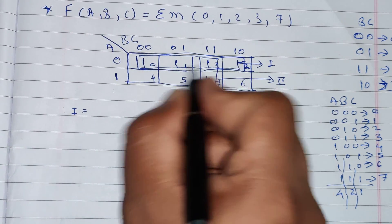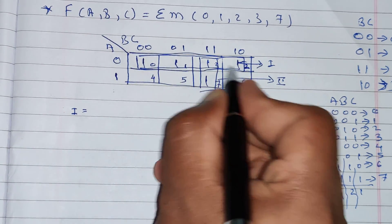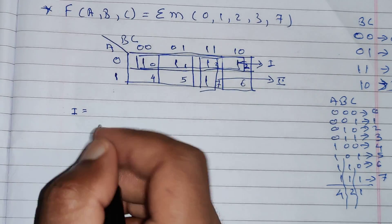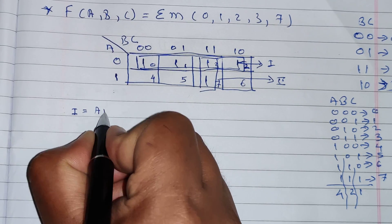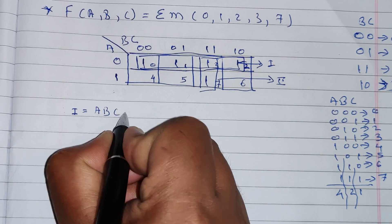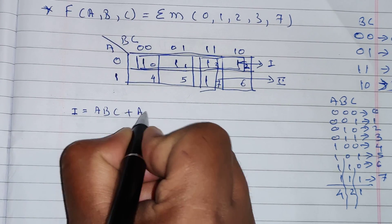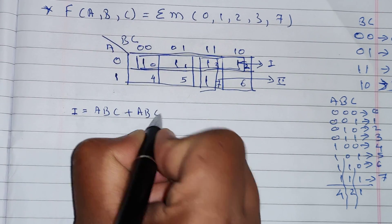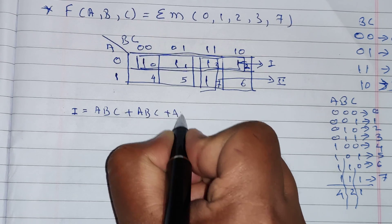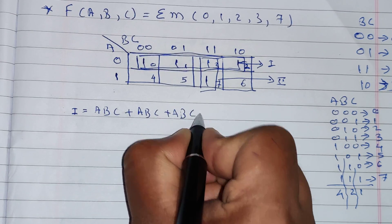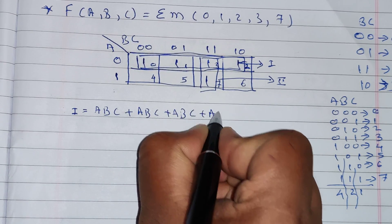For Group 1, there are four 1s, so we write four terms: ABC + ABC + ABC + ABC (using complemented or uncomplemented variables as appropriate for each cell).